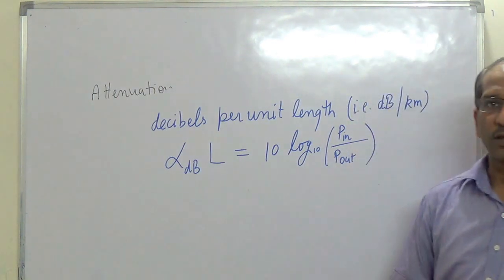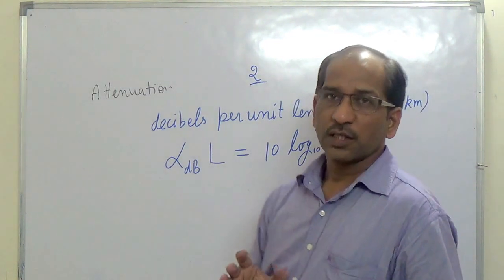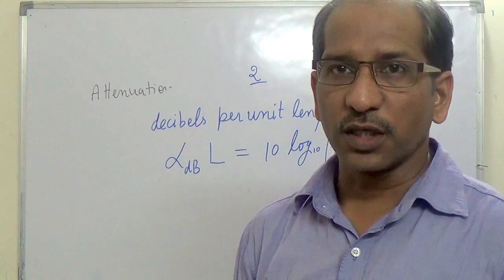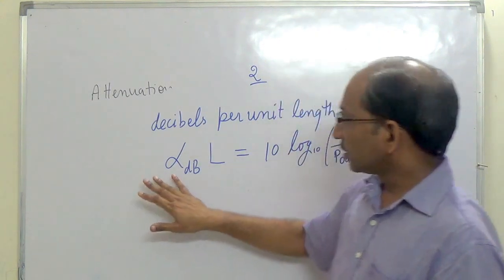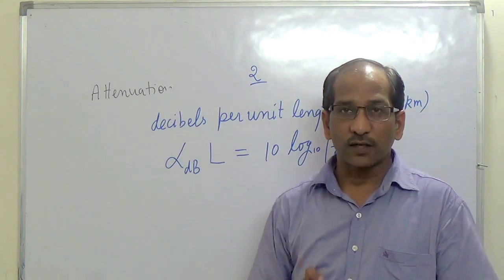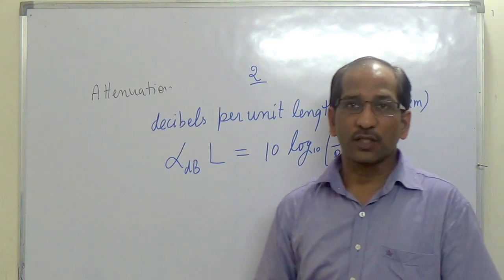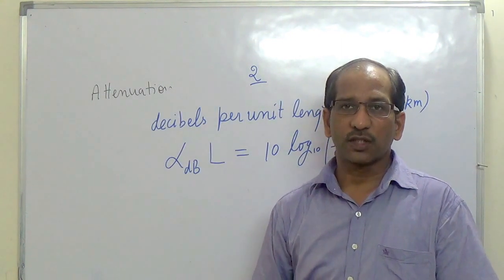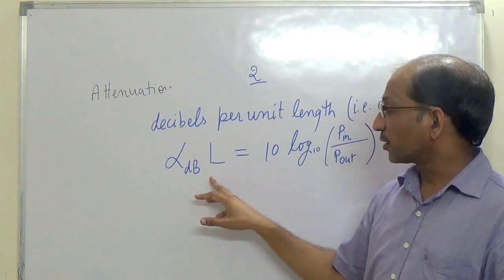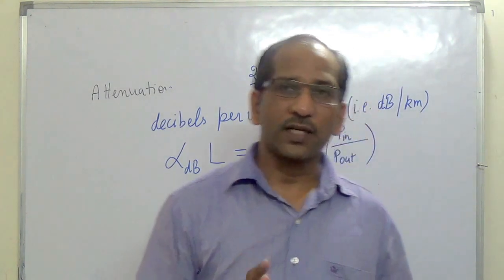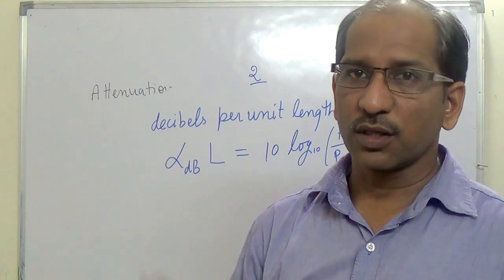This is our second formula for attenuation. So there are two formulas for attenuation. In the first case, there is no use of the length. But in the second case, we are using the length, so the attenuation is calculated per unit length and is defined in terms of kilometers — the loss of the signal per kilometer. In the first formula, dB is equal to 10 log at base 10 of P_input upon P_output.